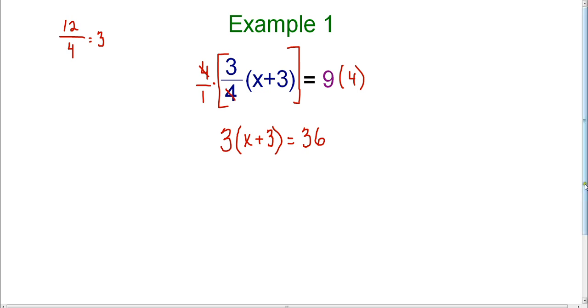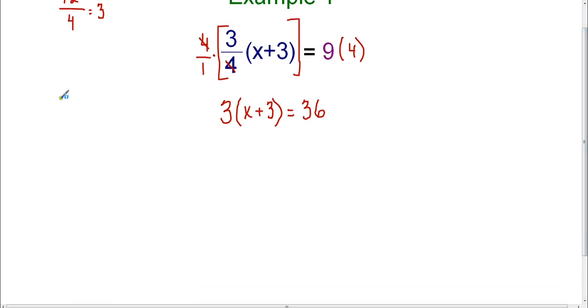Now we need to distribute. We know that 3 times x plus 3, we're going to distribute the 3. So 3 times x is 3x, and then 3 times 3 is 9, and that equals 36.